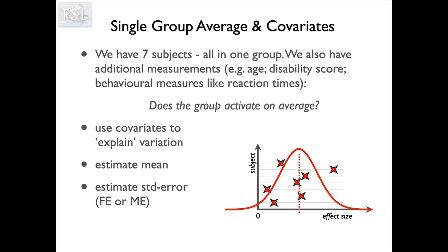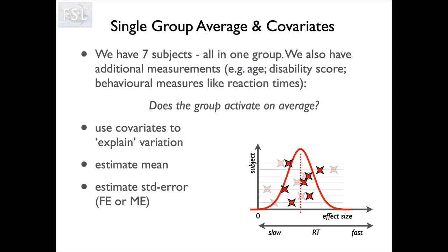The unexplained variance is what gets attributed to the random factor in our stats. In this instance we have seven subjects in one group with some additional measurements — it might be age, disability score, or reaction time, whichever is appropriate for the experiment. If one or more of these covariates can explain variation, it's useful to put them into the model. For example, large effect sizes might be associated with fast reaction times and small effect sizes with slow reaction times. If that were the case, putting that covariate in would explain some variance, make the distribution tighter, and give a better statistical result.